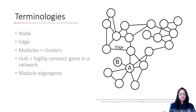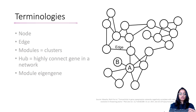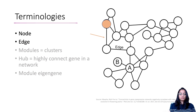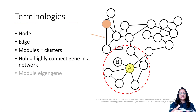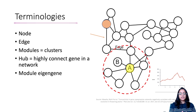Before going over the various steps in weighted gene co-expression network analysis, let's talk about some terminologies. This is a co-expression network where each node denotes a gene. Genes are connected to each other by edges, which represent how they are correlating. When genes with very similar expression profiles cluster together, they form a highly connected network called a module. Genes highly connected to others within a module are called hub genes, and the module eigengene is a representative gene expression profile for a module.